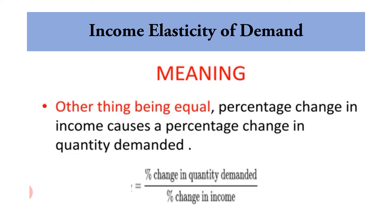The next concept is income elasticity of demand. The meaning is: other things being equal, the percentage change in income that causes a percentage change in quantity demanded. Here we are only talking about income instead of price, with everything else held constant. The formula is: change in quantity demanded divided by change in income.